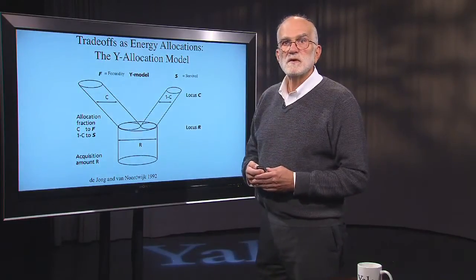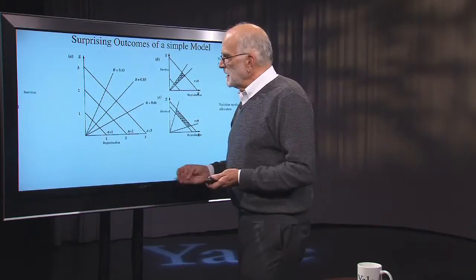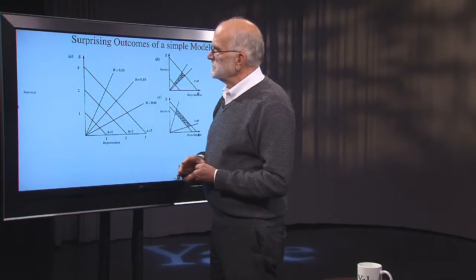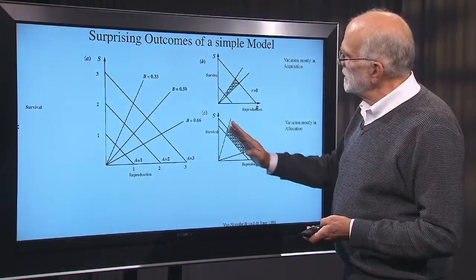The Y-allocation model has a surprising outcome. If we place reproduction on the x-axis and survival on the y-axis, with three different levels of acquisition (1, 2, and 3), the upper limits on energy differ by acquisition level. If variation is mostly in acquisition and not very much in allocation, we get a positive relationship between survival and reproduction. If variation is mostly in allocation and not very much in acquisition, we get a negative relationship.